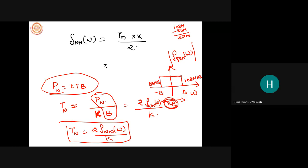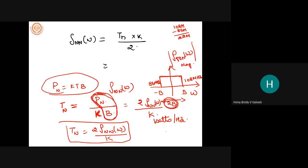That 22 MHz is two times the one-sided bandwidth, because your magnitude spectrum is even in nature — it always covers equal halves on either side of the y-axis. So your noise temperature is written as noise power divided by Boltzmann's constant times bandwidth. This P_N divided by bandwidth is nothing but your power spectral density — watts per hertz.